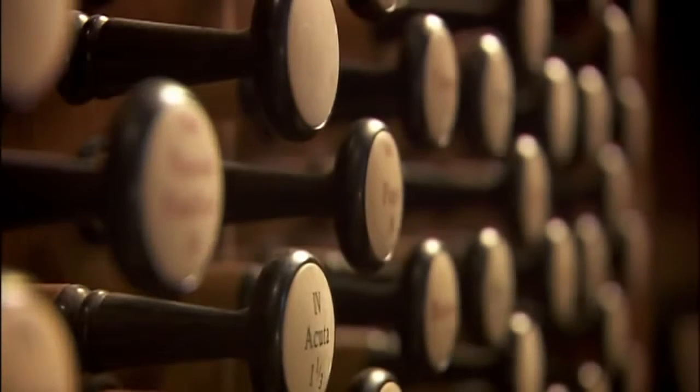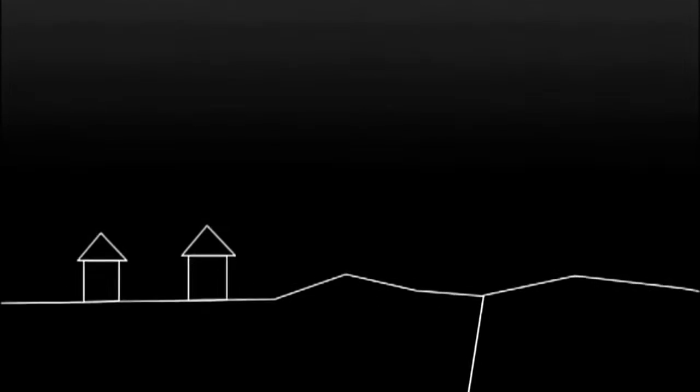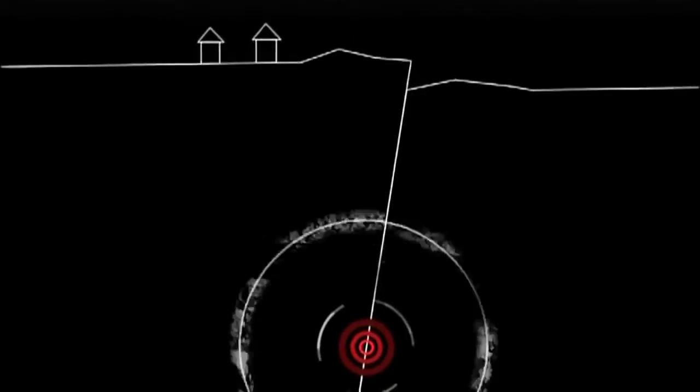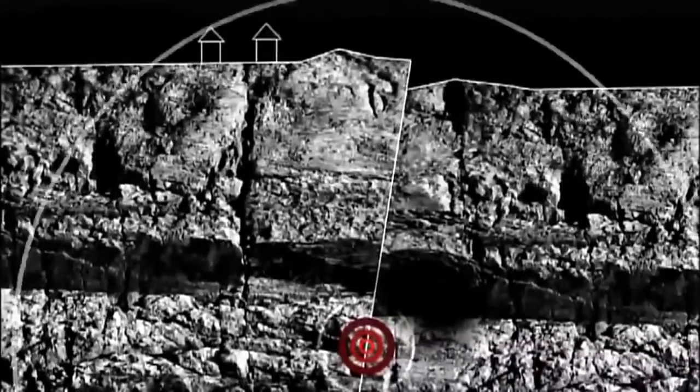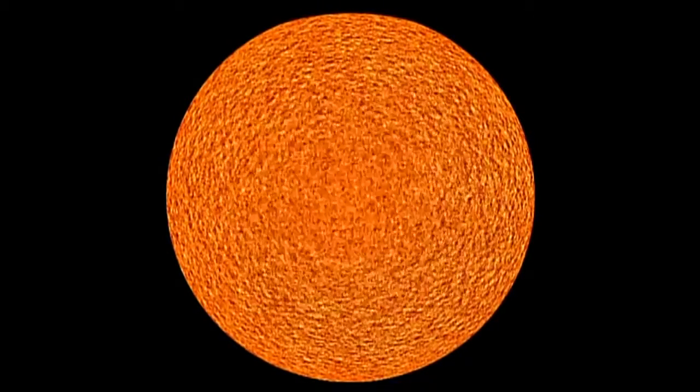Our sun vibrates like a giant pipe organ. But instead of air producing the notes, churning gases deep inside send sound waves rippling through its interior. Because a sound wave changes as it moves through different material, we can look at the different frequencies and determine what's happening inside the sun. Geologists are familiar with this. By studying sound waves passing through the Earth's crust, they can see the layers below our feet. A technique called seismology. Similarly, sound waves moving through the sun's interior reveal how it's made up.